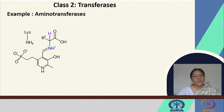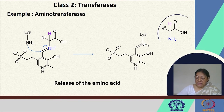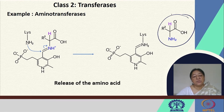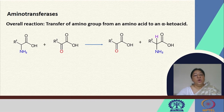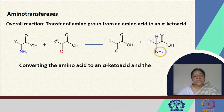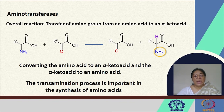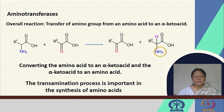Following a tautomerization, we now have the amine transferred to the R2 group, which releases the amino acid. The overall reaction has been the transfer of the amino group from an amino acid to an alpha-keto acid, and this process is extremely important in amino acid synthesis considering that we have a transfer of an amine group.